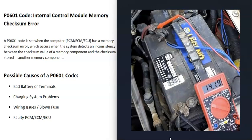To test the alternator, connect the multimeter to the battery terminals and start the engine. Check the voltage — for most vehicles, the alternator output should be between 13.5 and 14.5 volts, meaning it's good. Keep in mind that some newer vehicles have what's called a smart alternator, where the voltage output can vary and is controlled by the computer, but for most vehicles 13.5 to 14.5 volts indicates it's working properly.